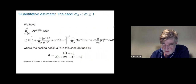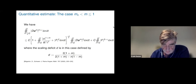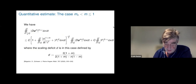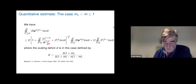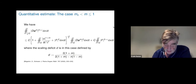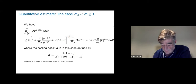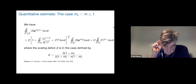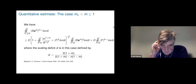This was joint work with Bögelein, Duzaar, Kochube, and Schätzler, published in 2019. The case m < 1 has a similar estimate — the main difference is in the pre-factor: here |u|^(2m)/r² is replaced by |u|^(m+1)/r^((1+m)/m), with scaling deficit d = 2(1+m)²/(2(1+m) − n(1−m)). This paper with Bögelein and Schätzler was published in 2020 in Crelle's journal.